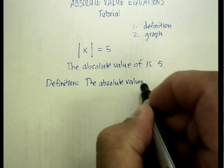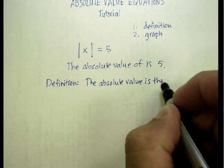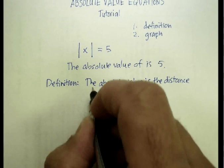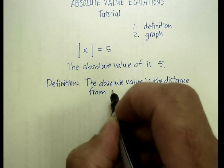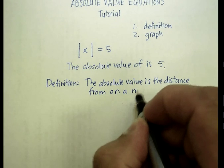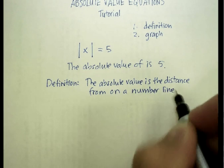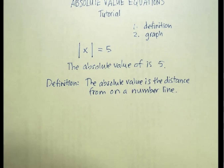The absolute value is the distance from zero on a number line. Now, let's go back to our example and see what that would mean.